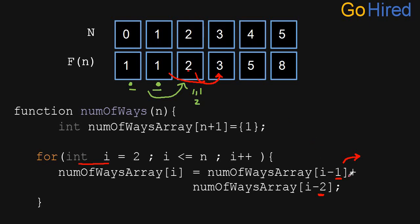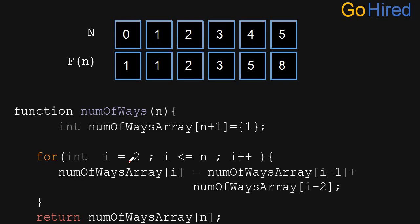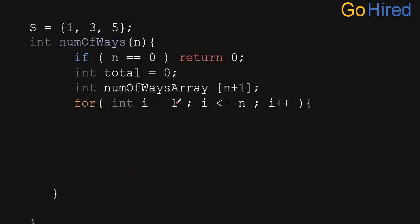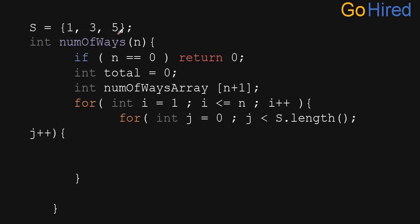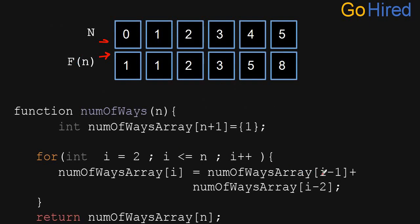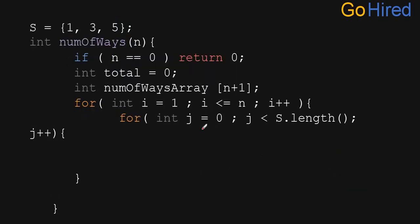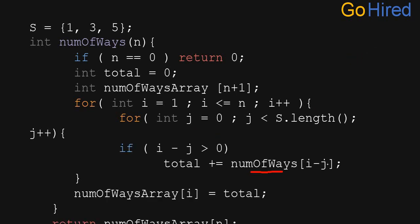We write a function with two for loops: one outer loop for i from 1 to n, and an inner loop for j from 0 to steps.length iterating over jumps 1, 3, and 5. The total is accumulated as numberOfWays[i] += numberOfWays[i - steps[j]], reaching i-1, i-3, and i-5. This generalizes the bottom-up DP solution for any given set of allowed jump sizes.